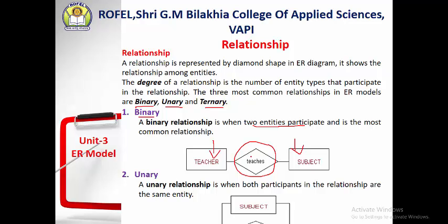In a unary relationship, only one entity type is involved, and that entity participates in the relationship with itself — not with another entity. So when both participants in the relationship are the same entity, that is a unary relationship. Normally in ER diagrams, we follow the binary relationship.